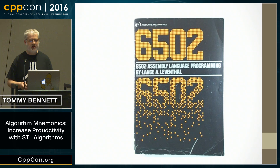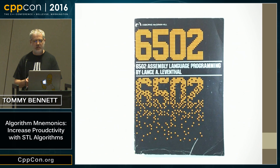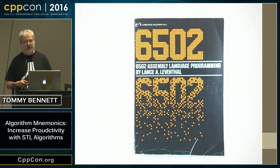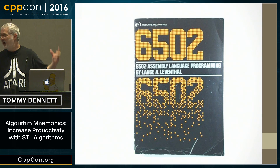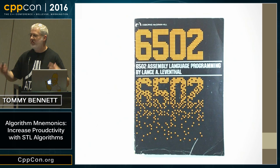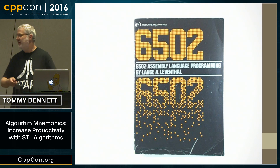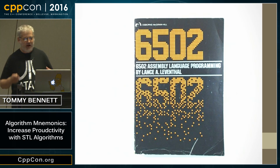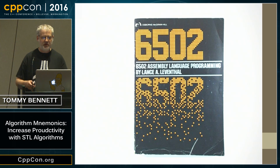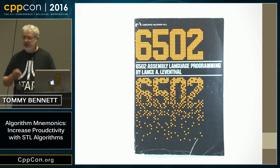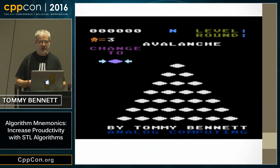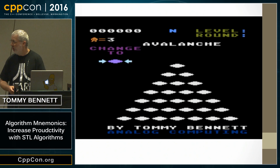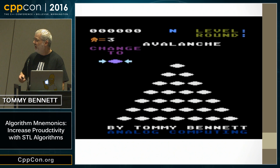An Atari 800 has a 6502 microprocessor. This book was like my Bible for the next four or five years. I mean, if you found me, you found this book. I would be reading it at 3 o'clock in the morning sometimes. I did go on to publish a video game, actually, in 1982. Yeah, I'm an old programmer.